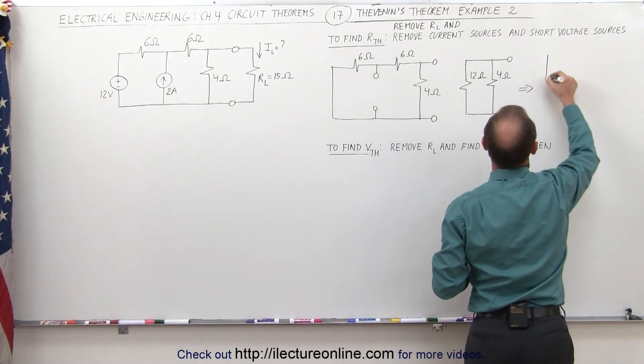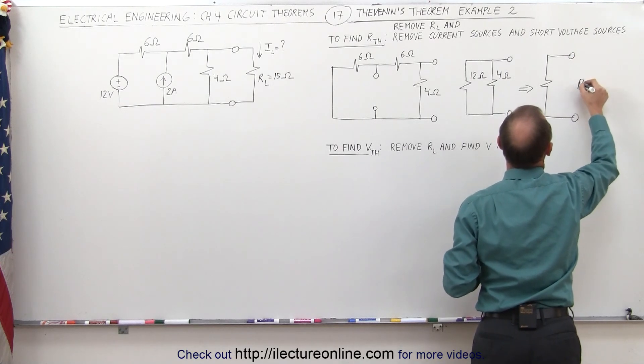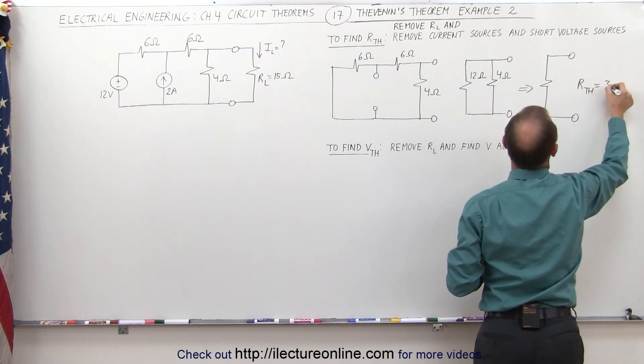That means we have a single 3 ohm resistor, and that becomes the Thevenin's resistance. R_TH equals 3 ohms.